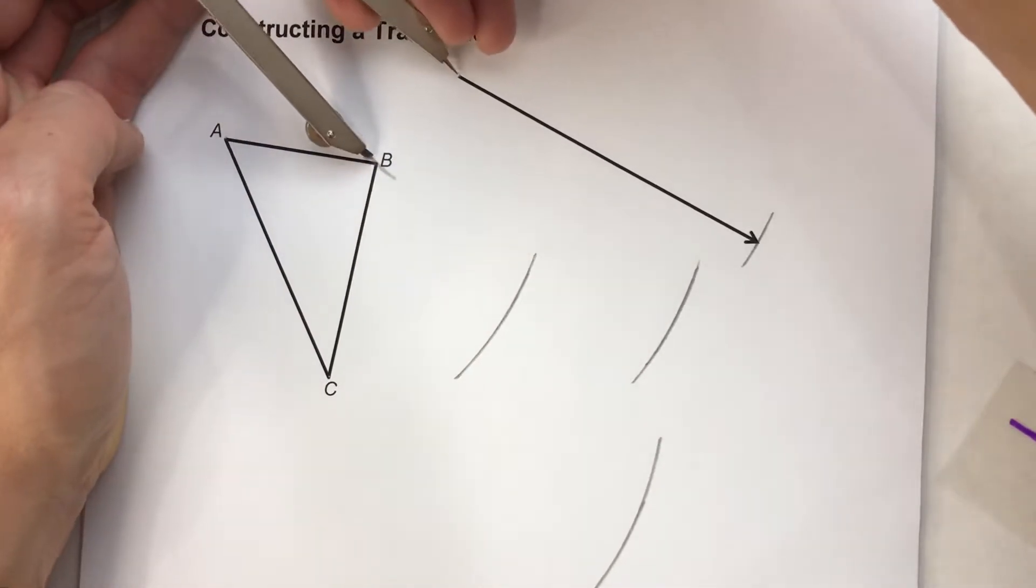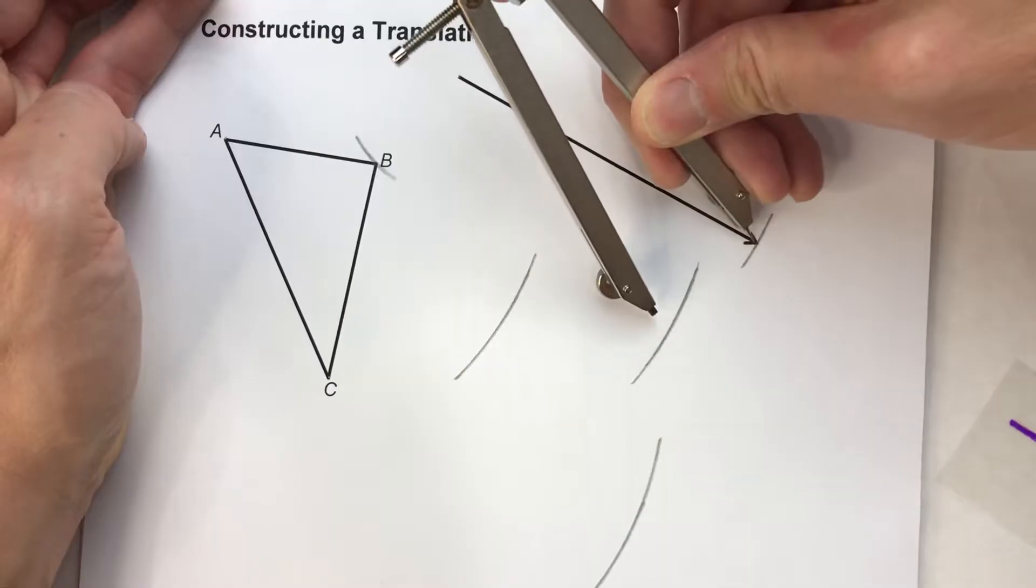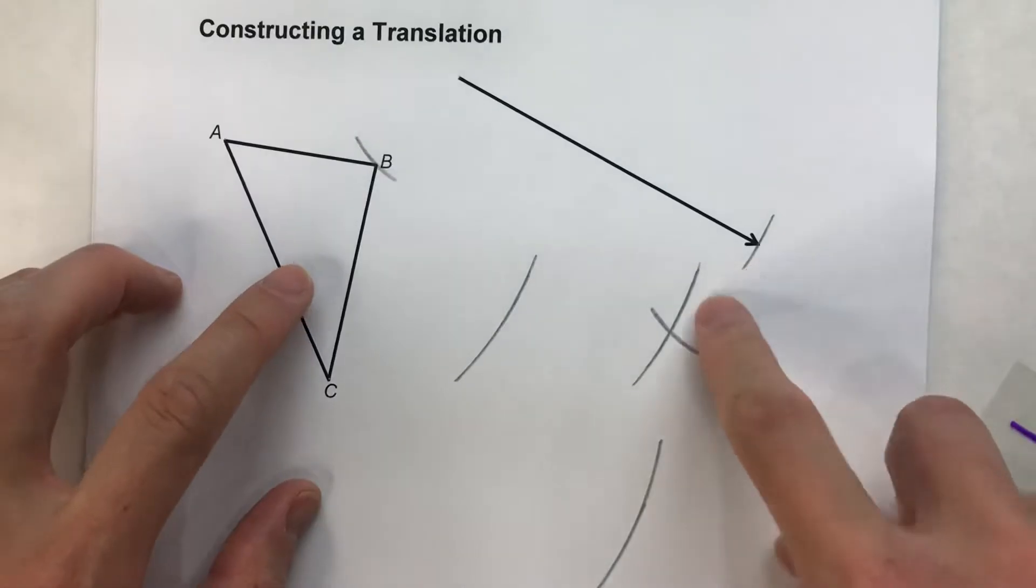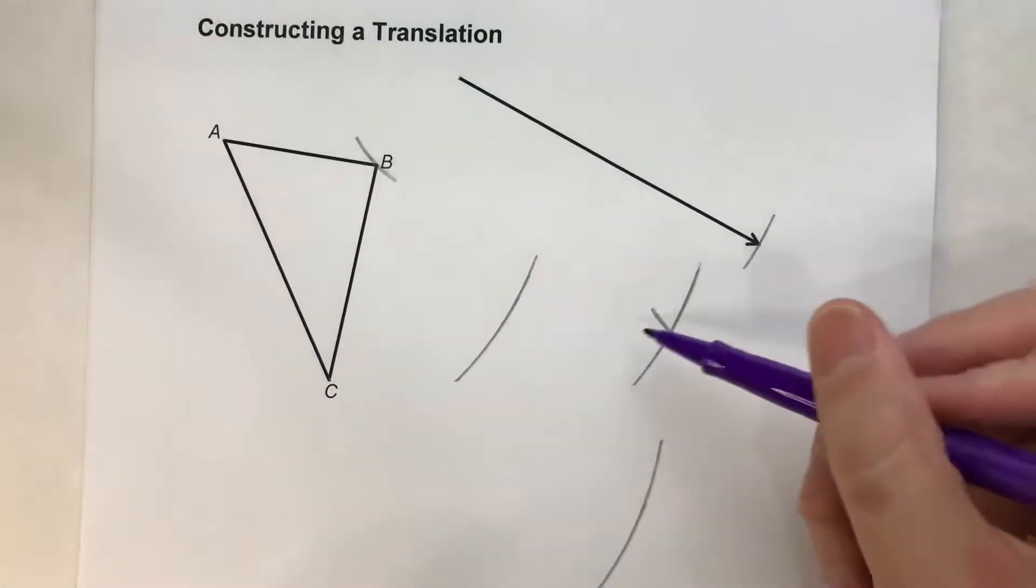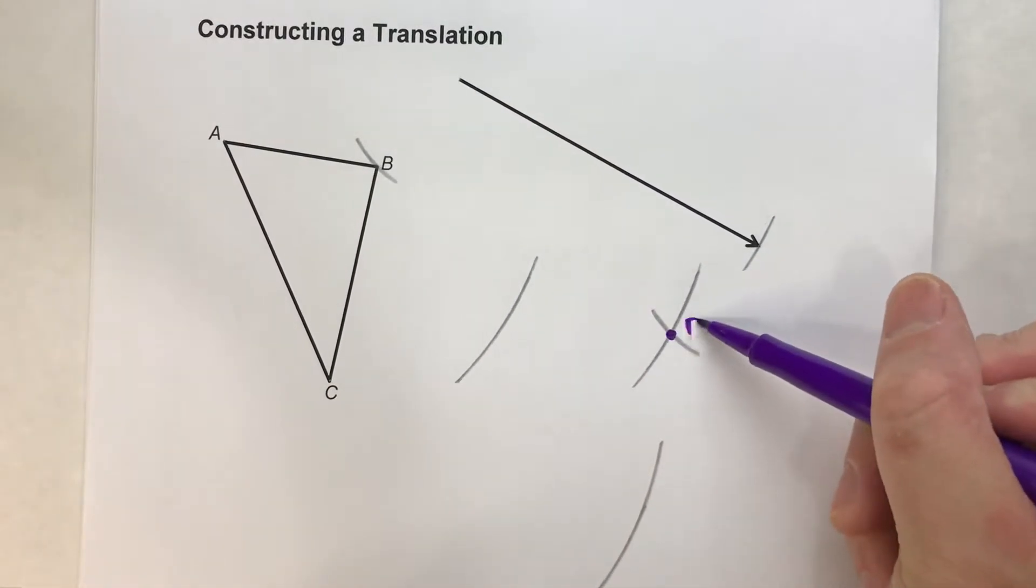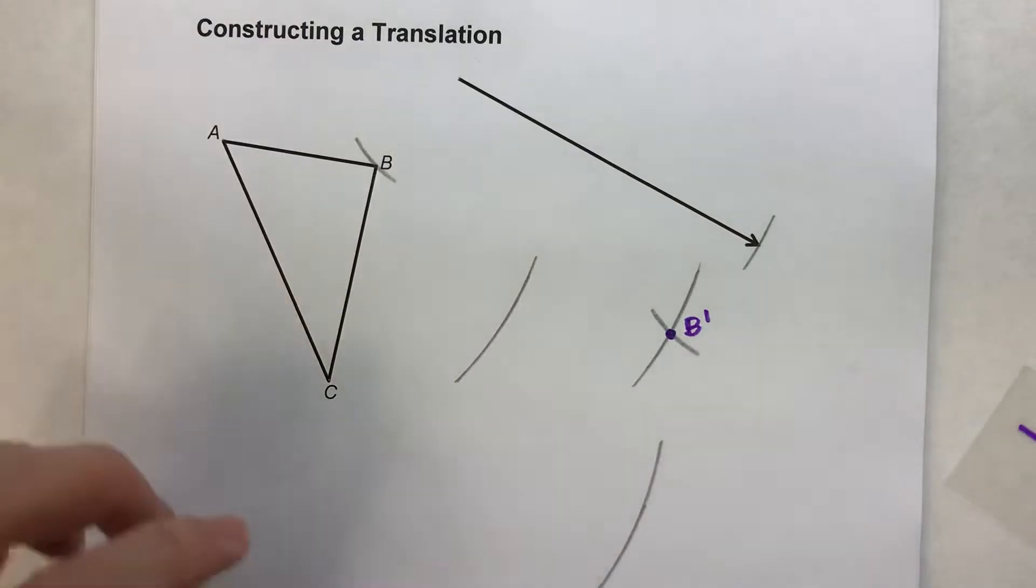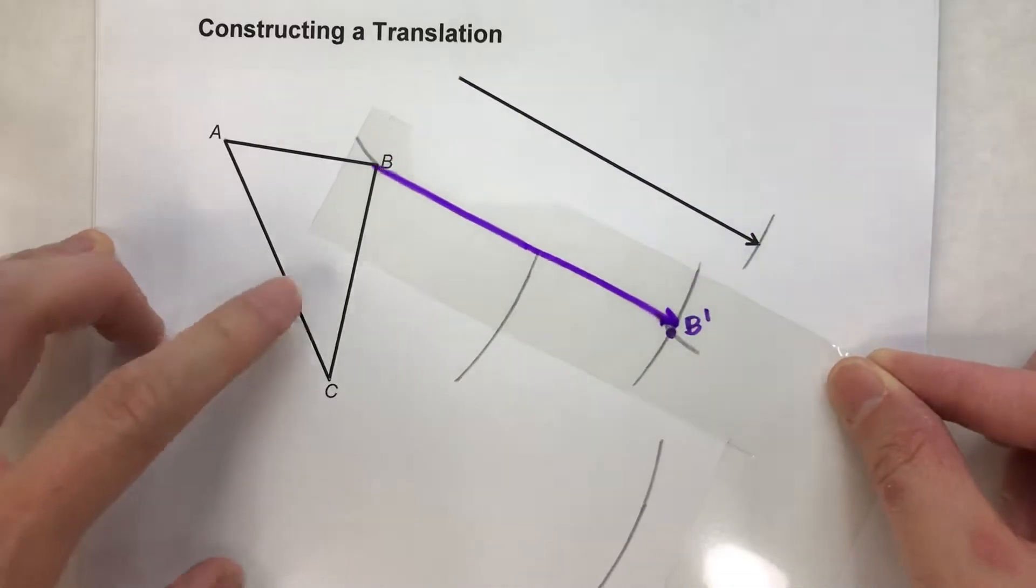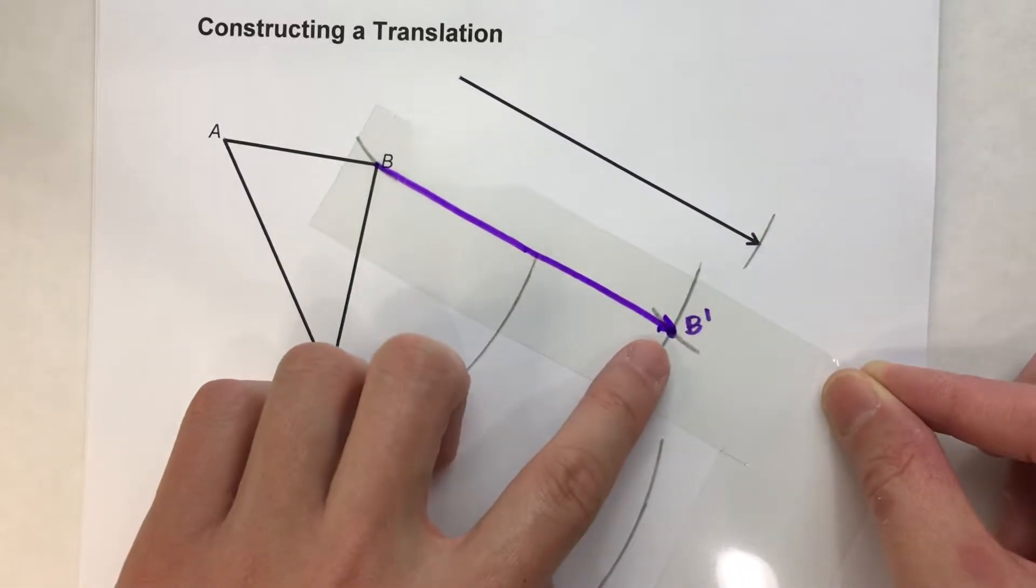And I'm going to take that exact same setting to the end of the vector and swing an arc. And where those two arcs intersect is my B prime. And that's where B is going to slide to. So again, we took that vector, we slid it over here, and now we know where B prime ends up, right there.